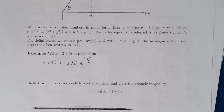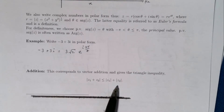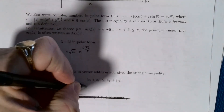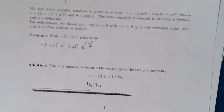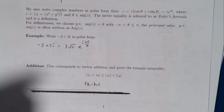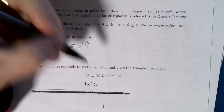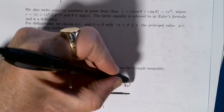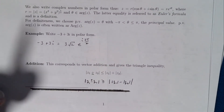Addition of complex numbers corresponds to vector addition, and you'll recall the triangle inequality, which is very important. There is also a second triangle inequality worth mentioning: |z₁| − |z₂| with a plus or minus is less than or equal to the absolute value of |z₁| − |z₂|. This second triangle inequality is one we will be using from time to time.